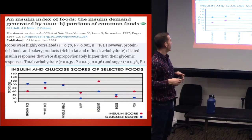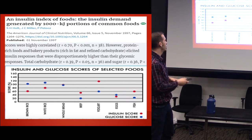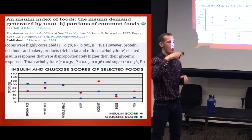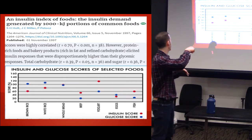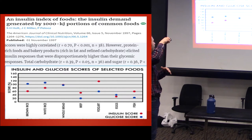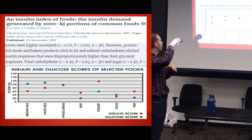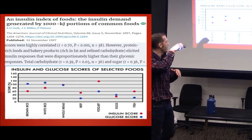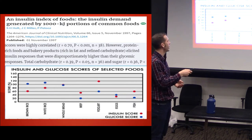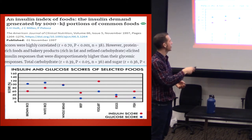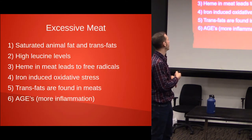Looking at insulin levels produced by consuming different foods: the red dots represent insulin scores, the blue dots represent blood glucose. With brown rice, glucose scores are high but insulin levels are relatively low. With beef and fish — meat products — insulin levels actually go up higher than blood sugar levels. Yogurt and eggs also show high insulin levels. So it shows you actually get a high level of insulin production with animal products.